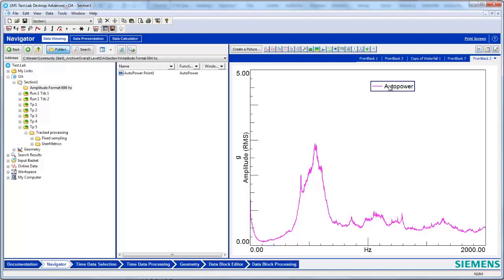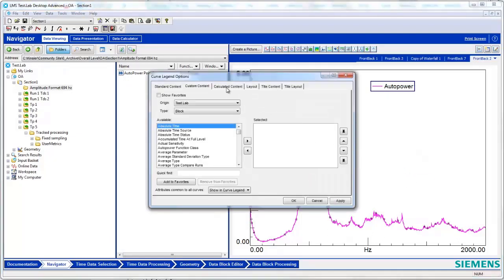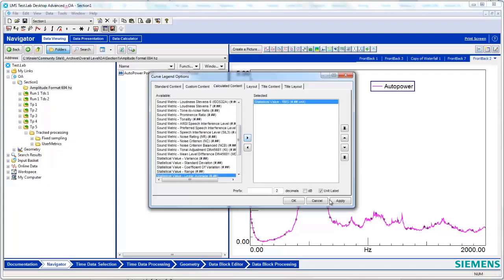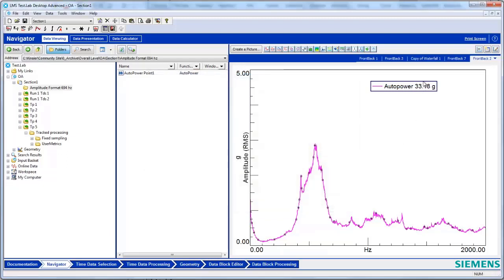To calculate the RMS of a spectrum, right-click on the legend, go to Options, Calculated Content, scroll down to RMS, add it to your selection, and hit Apply. And essentially this number is going to be a representation of the overall level of energy in the spectrum.